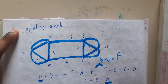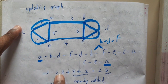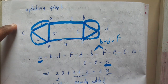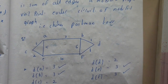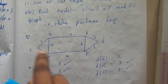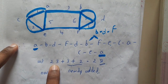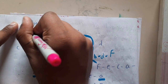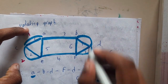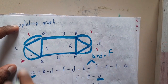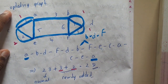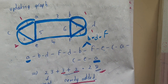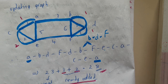The total cost is 28. The original graph had a total cost of 23, and we newly added edges with cost 3 (A→C→E) and 2 (B→D→F), giving 23+3+2=28. I hope everyone got a clear idea about the Chinese Postman Problem.